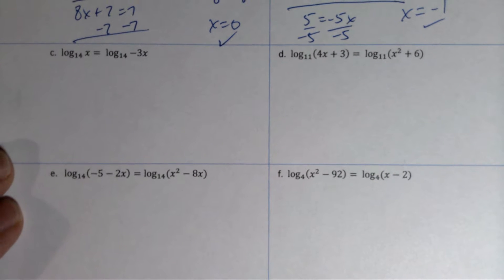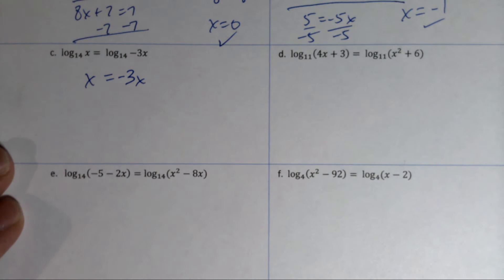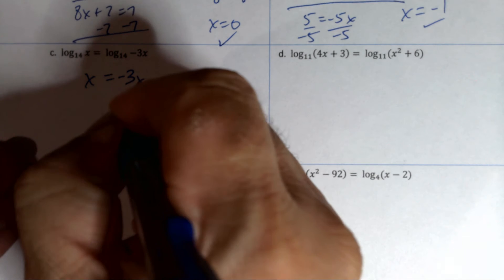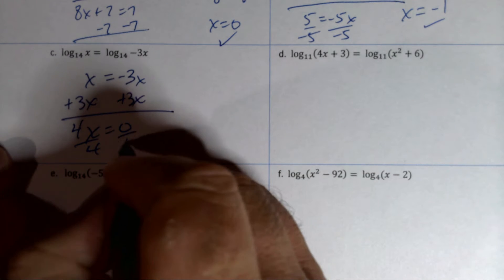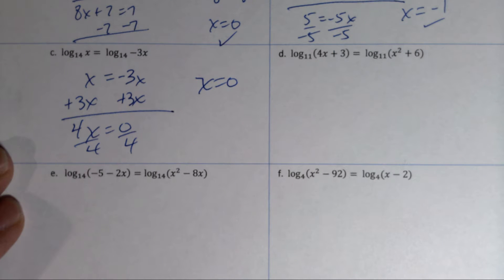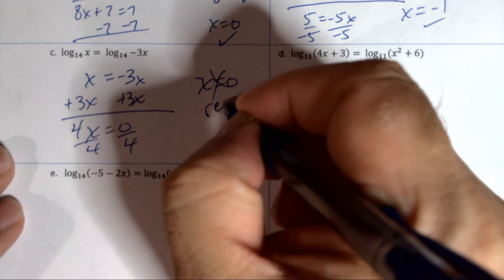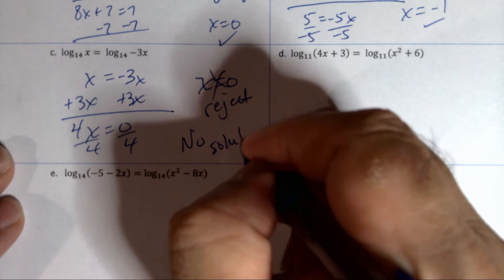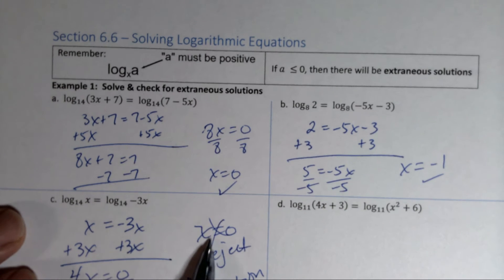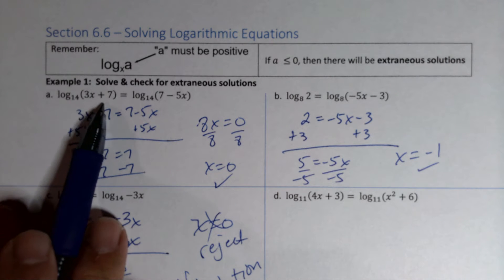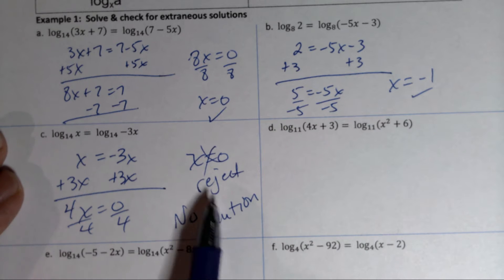For example C, drop the logs to get x = −3x. Adding 3x to both sides gives 4x = 0, so x = 0. But plugging 0 in turns the argument into 0 — you cannot have the log of 0, so we reject this answer. There is no solution. Note: x = 0 was okay in example A because plugging it in gave 7, not 0.